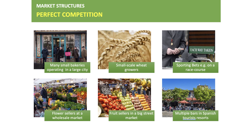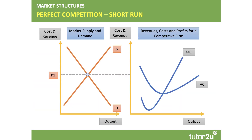We get close to perfect competition in some markets. You might have lots of small wheat growers, many small bakeries producing pretty homogeneous products, hundreds of flower sellers at a wholesale market, or tens of fruit sellers in a big street market. Sporting bets on a racecourse also takes us close to perfect competition, as does a Spanish resort where multiple bars and nightclubs offer pretty much the same product.